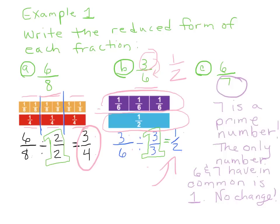My favorite one here is six-sevenths. Seven is a prime number. The only number that six and seven have in common is one, and that's just not going to make a difference. If I were to divide by one over one, it's going to be the same thing — it's going to be six-sevenths. This is already in what they call lowest terms.